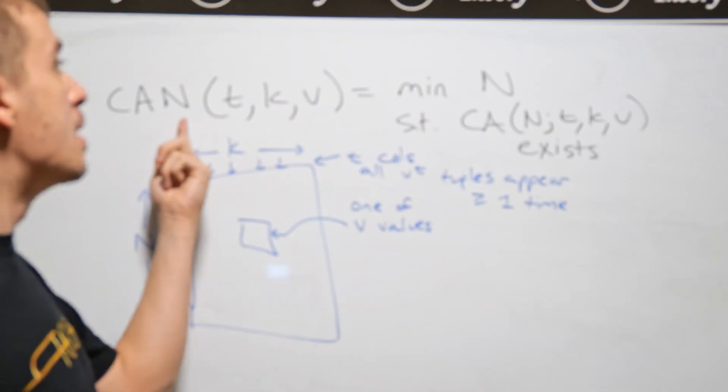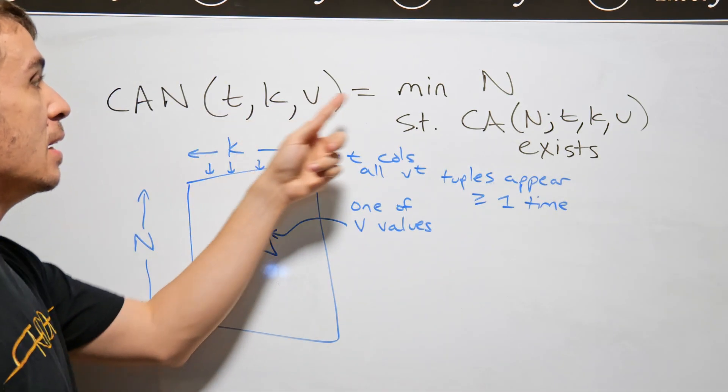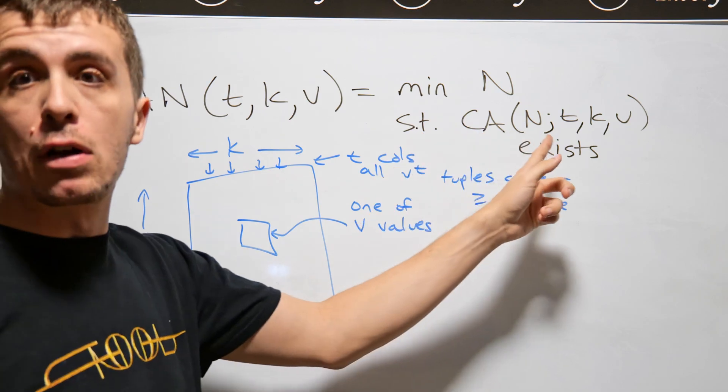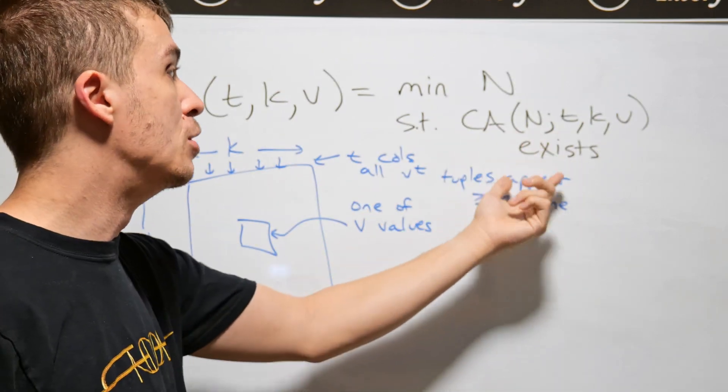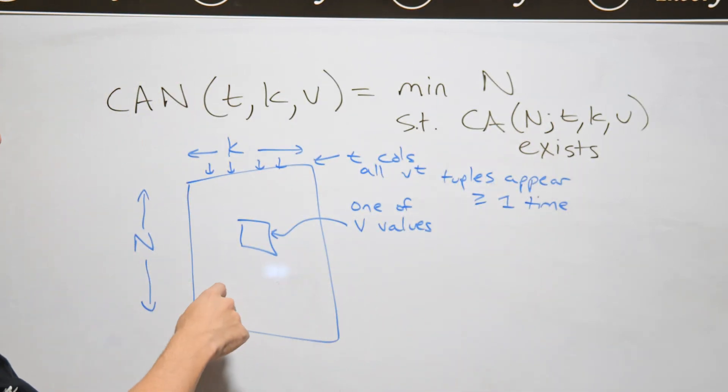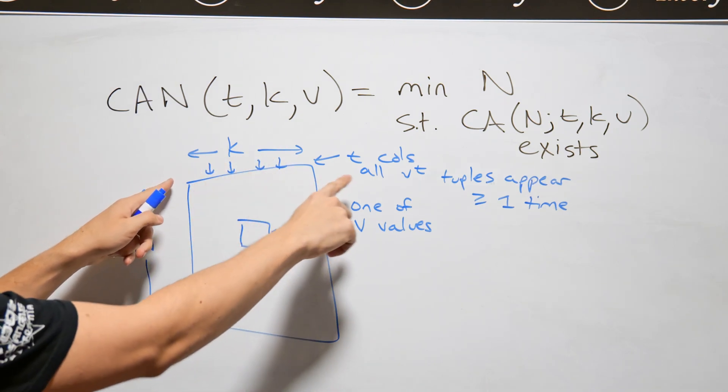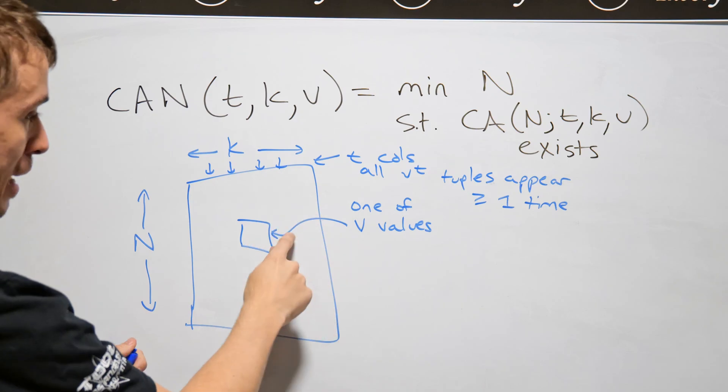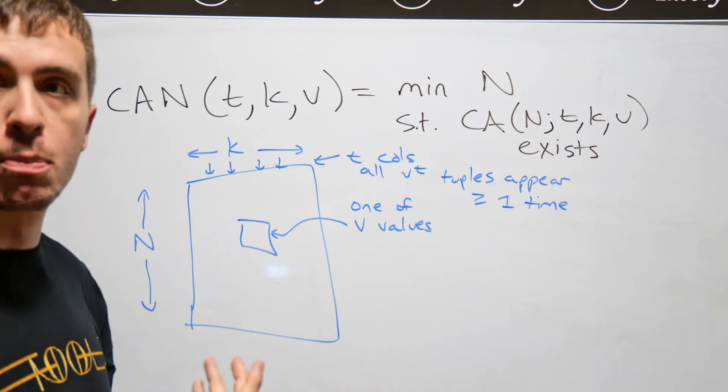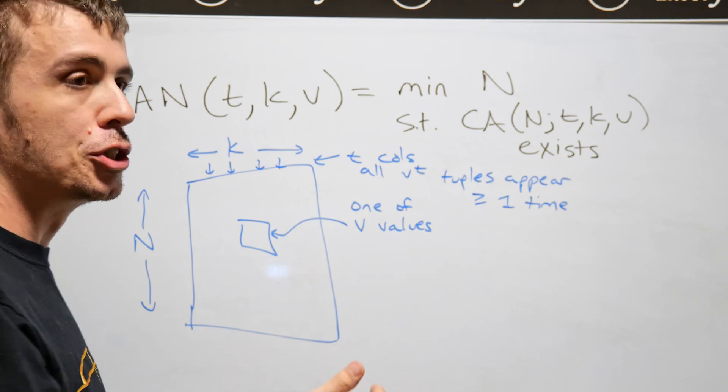In that video, I defined this covering array number quantity to be the minimum n such that a covering array on some parameters exists. So what's a covering array? It's an n by k array, so n rows here and k columns, and each of the entries within there is one of v possible values.